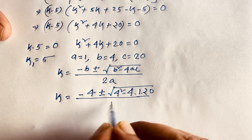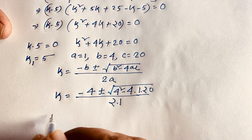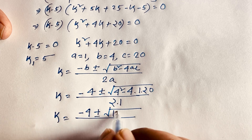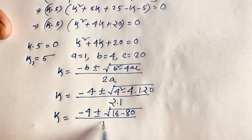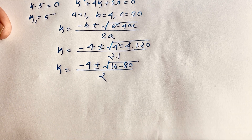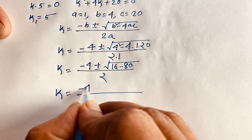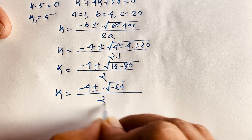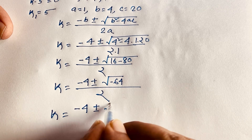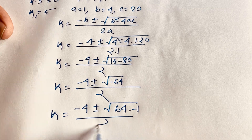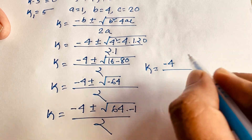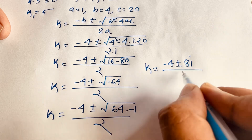Using the quadratic formula, k = (-b ± √(b² - 4ac)) / 2a. With a=1, b=4, c=20: the discriminant is 16 minus 80, which is -64. So k = (-4 ± √(-64)) / 2, which is (-4 ± √64 × √(-1)) / 2.